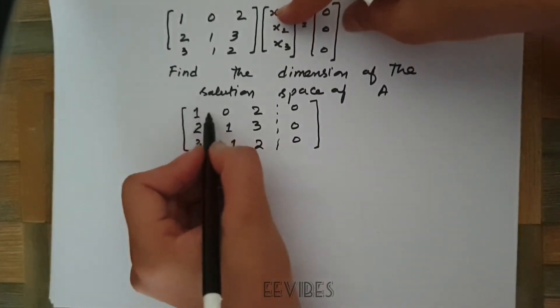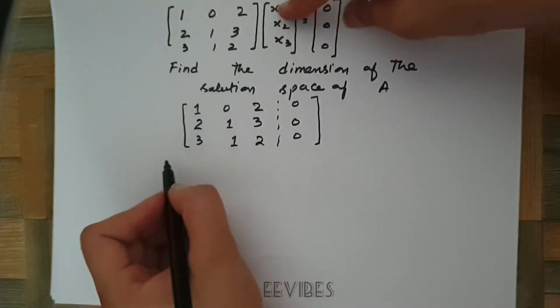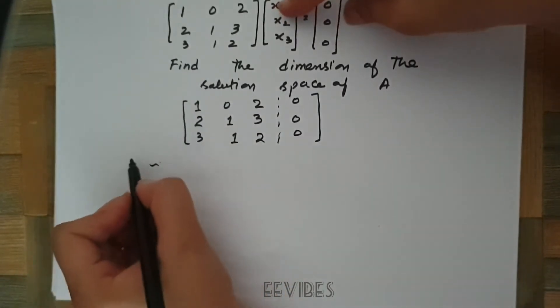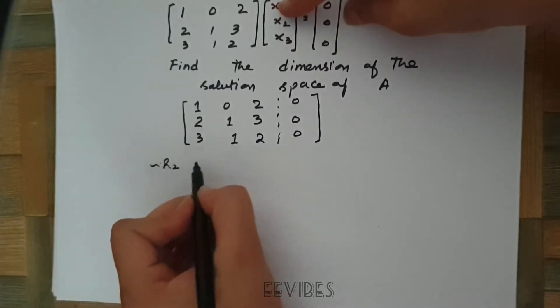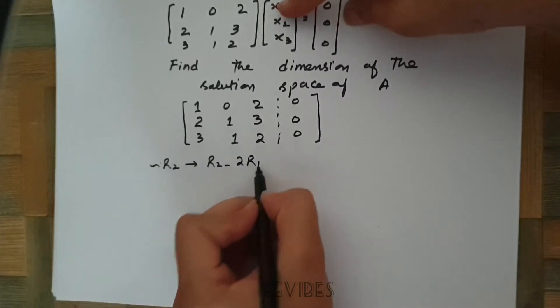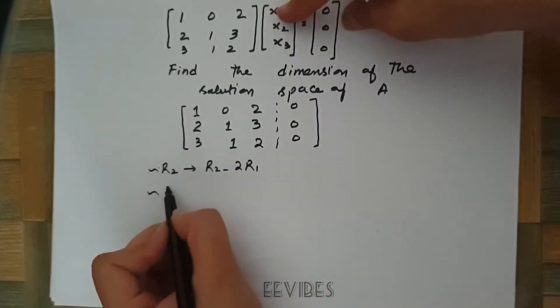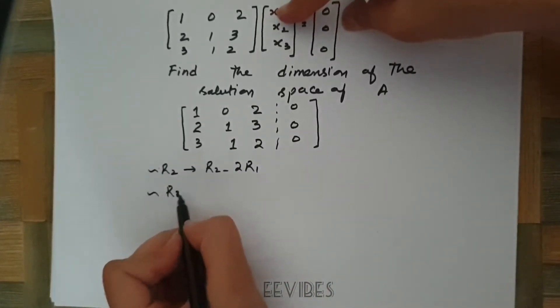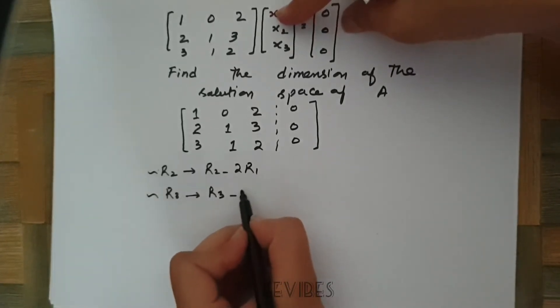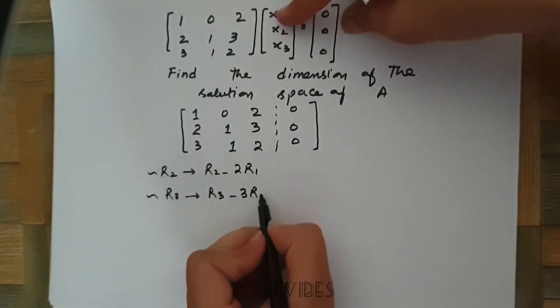Since the pivot entry is already equal to 1, we don't need to scale the pivot. I will perform the operations on R2, and it will be R2 minus 2 times R1. Similarly, I will perform the operation on R3, and the operation is R3 minus 3 times R1.